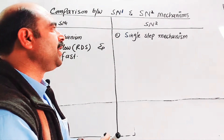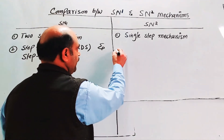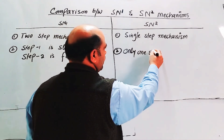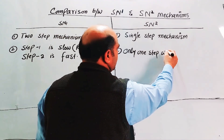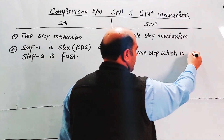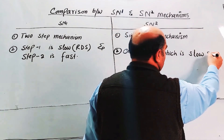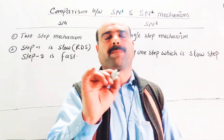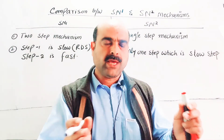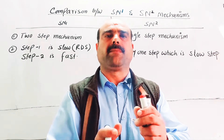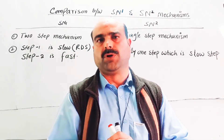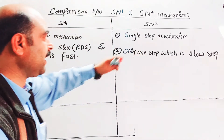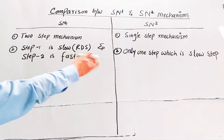In SN2, being a single-step mechanism, there is only one step, which is the slow step. In this step, bond breaking and bond making occur simultaneously. Since bond breaking and making happen at the same time, the only step is the rate-determining step.